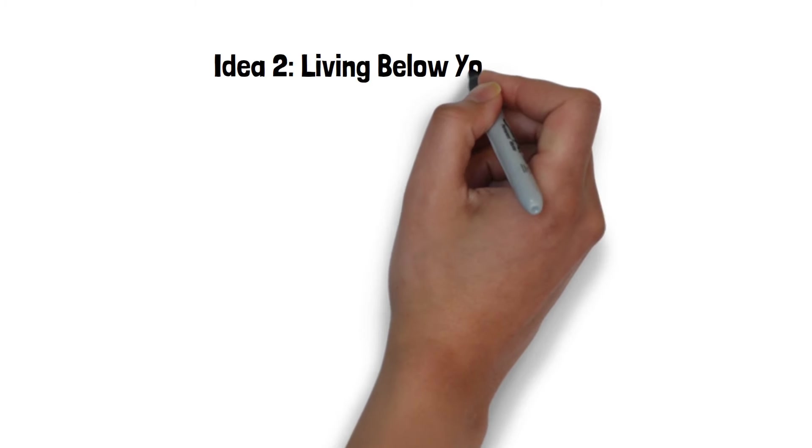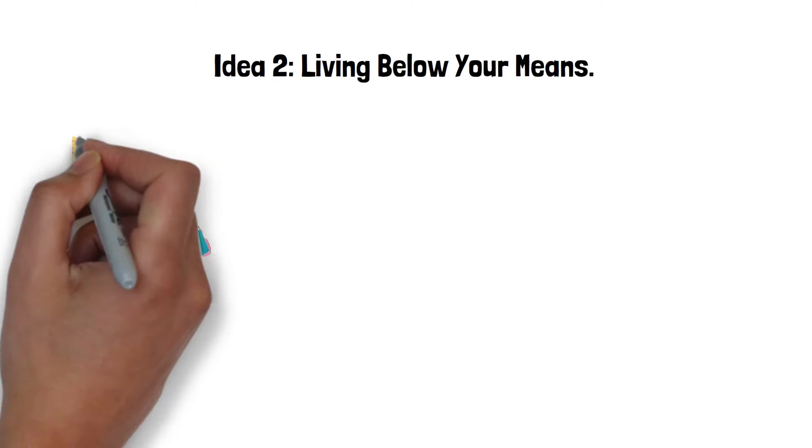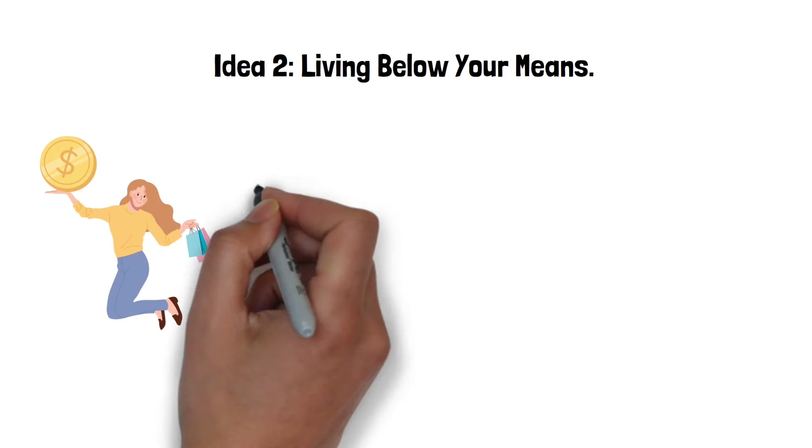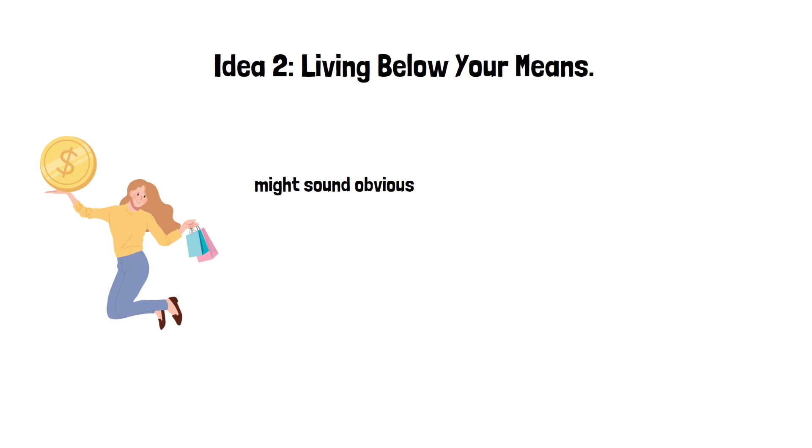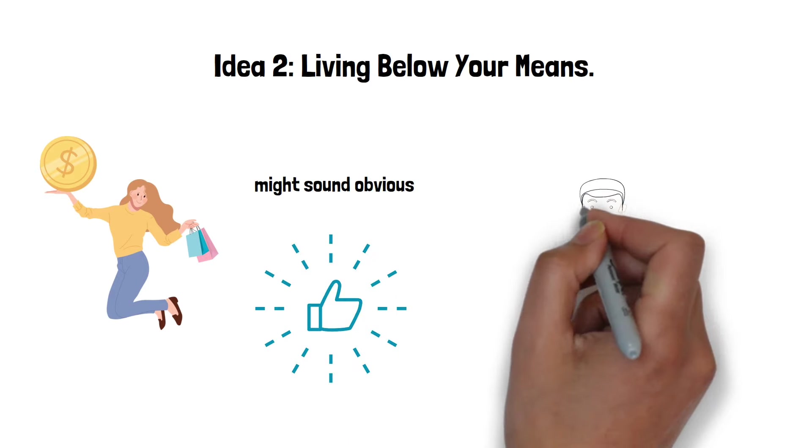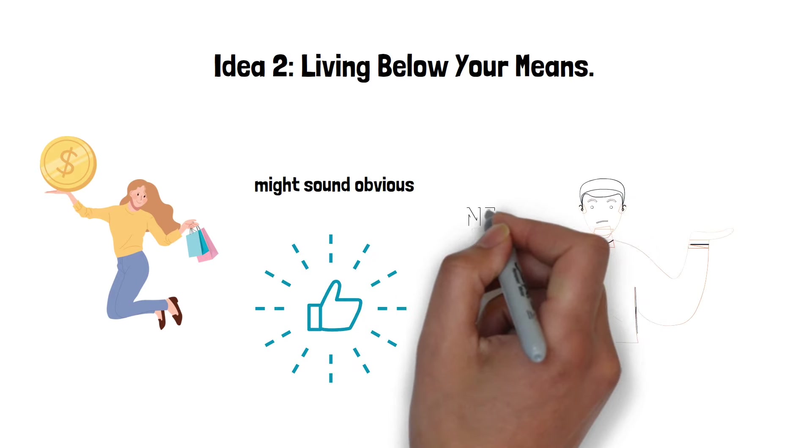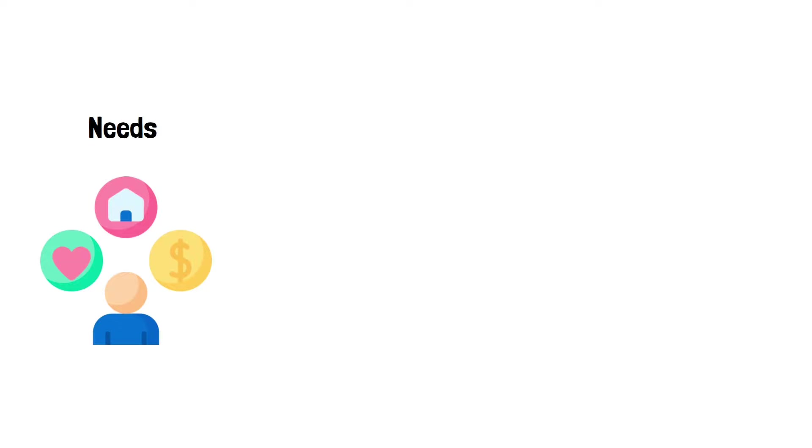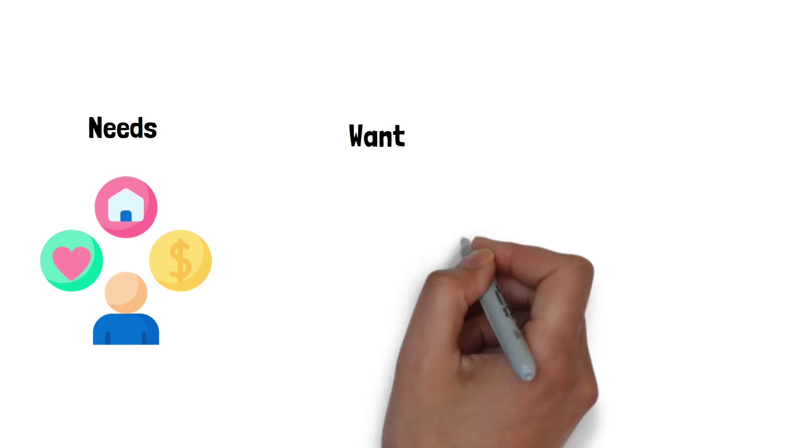Idea 2: Living below your means. Living below your means is a straightforward yet powerful concept. It's about spending less money than you earn. The key lies in recognizing the difference between what you need and what you want. Needs are the essentials, the basics you can't do without, like food, shelter and healthcare. Wants, on the other hand, are all the extras.